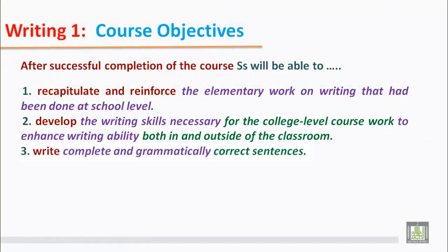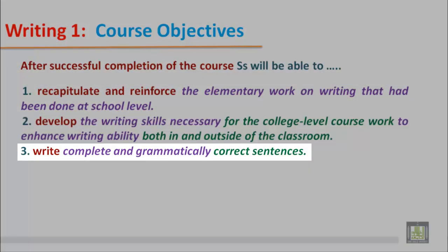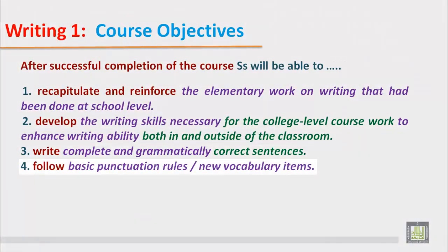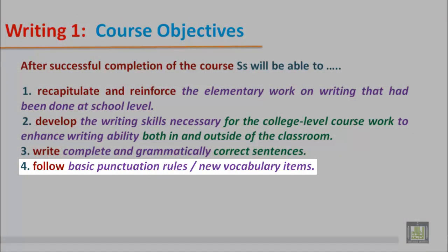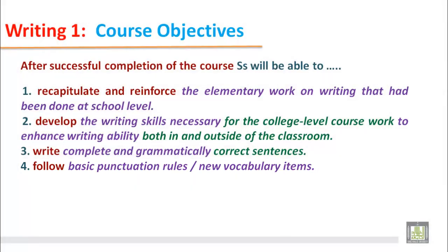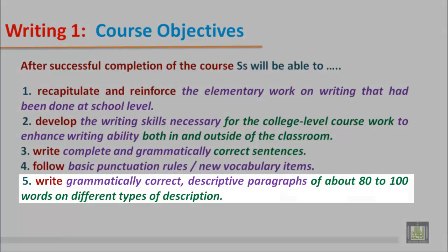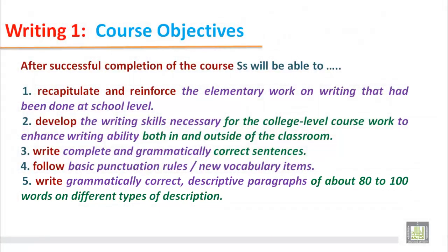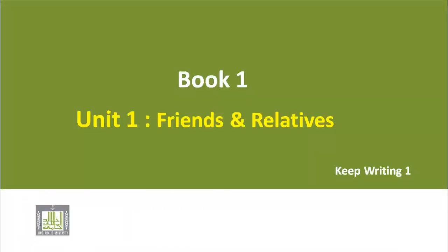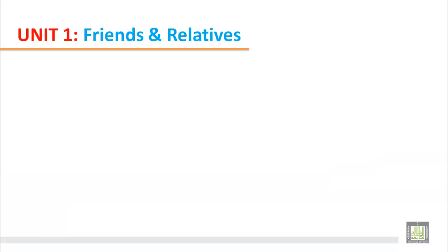Students will write complete and grammatically correct sentences, follow basic punctuation rules, learn new vocabulary items, and write grammatically correct descriptive paragraphs of about 80 to 100 words on different types of description. Book 1, Unit 1: Frames and Relatives.